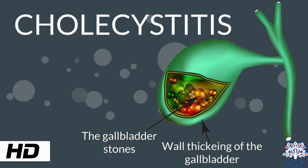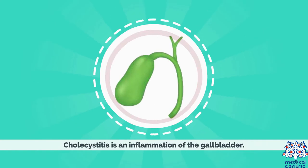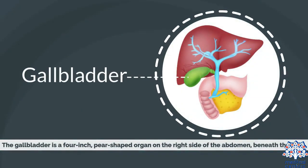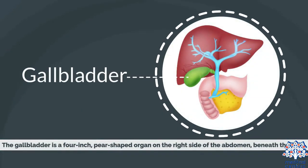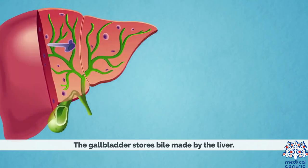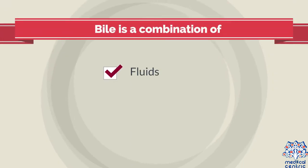Today's topic is cholecystitis. Cholecystitis is an inflammation of the gallbladder. The gallbladder is a 4-inch pear-shaped organ on the right side of the abdomen, beneath the liver. The gallbladder stores bile made by the liver. Bile is a combination of fluids, fat, and cholesterol.